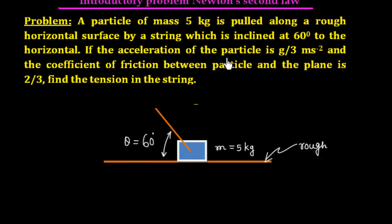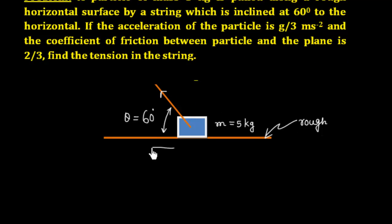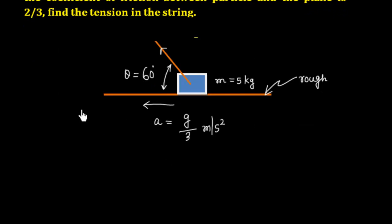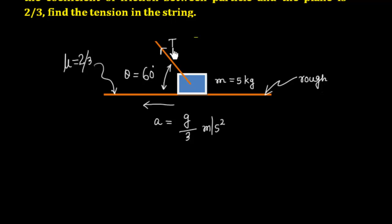If the acceleration of the particle is g/3 meter per second squared, the string is pulling the object in that direction with acceleration g/3. The coefficient of friction between the particle and the plane, mu, is given as 2/3. We have to find the tension T in the string.